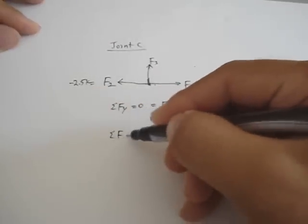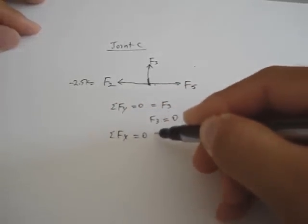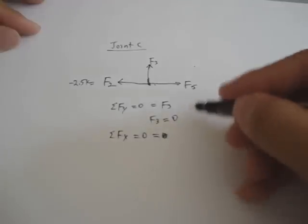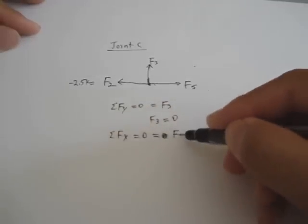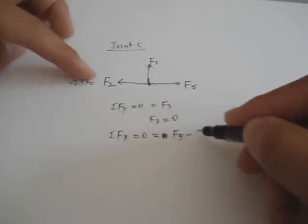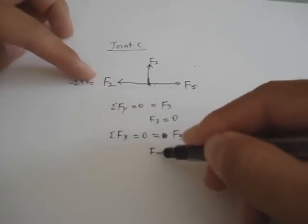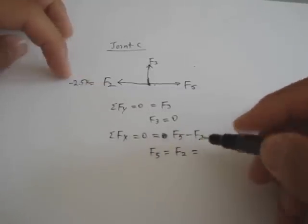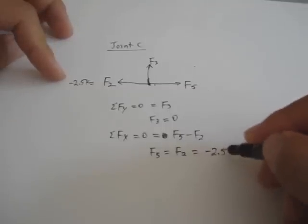Now let's do sum of the forces in x. It's equal to 0. That's equal to plus F5, and then the minus F2. Solve that for F5. It's equal to plus F2, which means that F5 is also minus 2.5 kips.